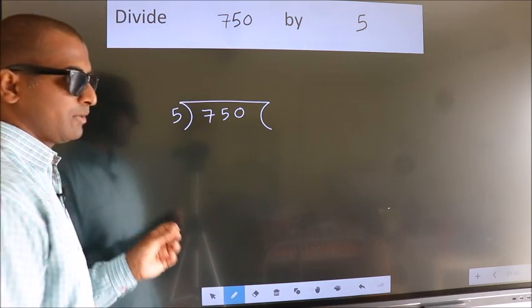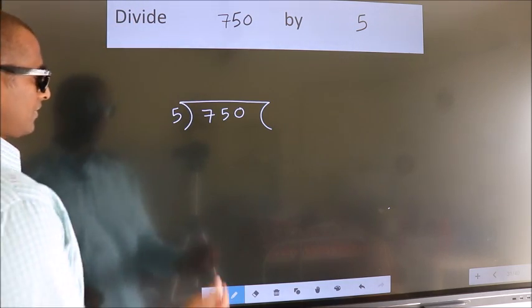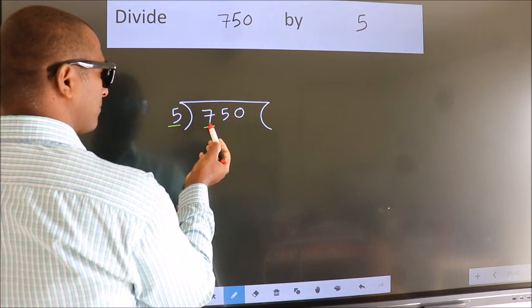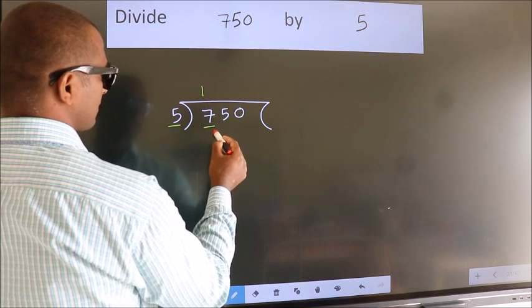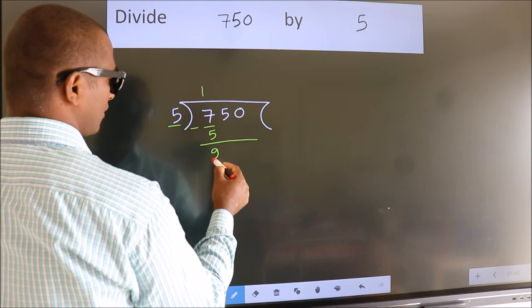This is your step 1. Next, here we have 7, here 5. A number close to 7 in the 5 table is 5 once 5. Now we should subtract. We get 2.